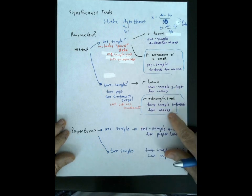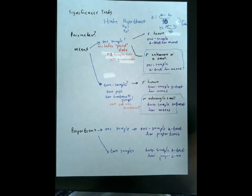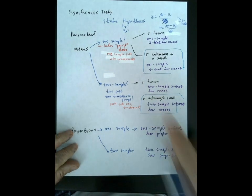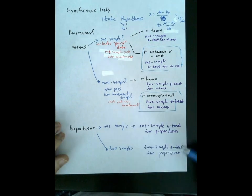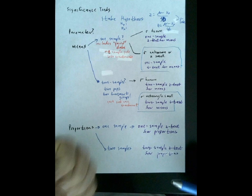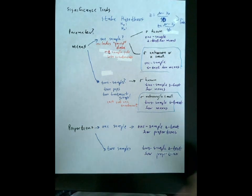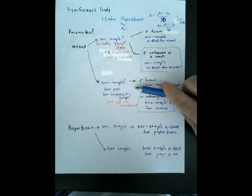If it's two samples — two independent populations — that's a two-sample t-test. You'll have one set of measurements on one independent sample and another set on a second independent sample, and you compare them. We use t because we don't know sigma. For proportions, it's a one-sample z-test or a two-sample z-test for proportions depending on whether you're comparing one or two population proportions.